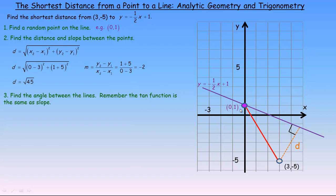The next step is to find the angle between those two lines, because once we know that angle in the right triangle, and we know the hypotenuse, we can find d. The key insight is that the tangent function — opposite over adjacent — is the same as rise over run, which means tan equals slope. I'll demonstrate how that works rather than just asserting it.